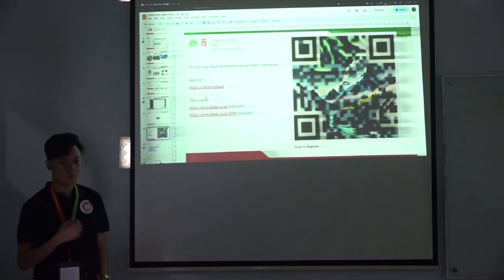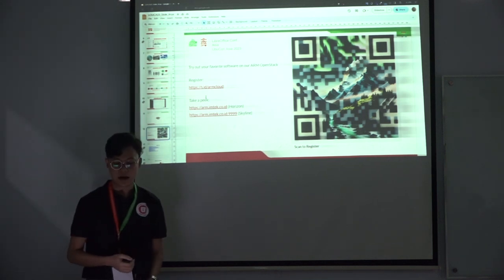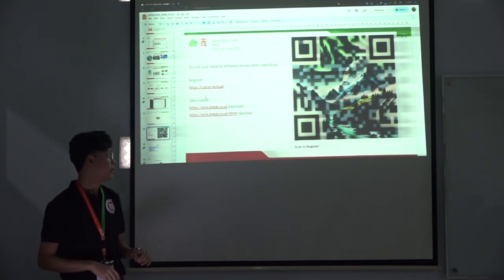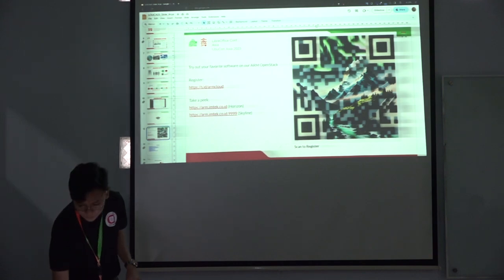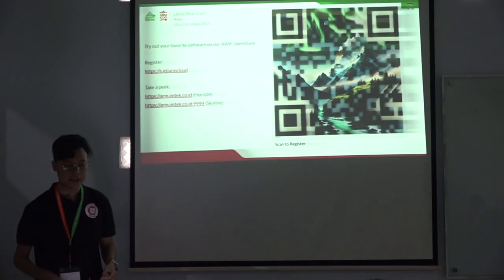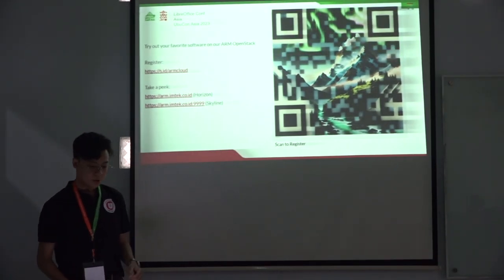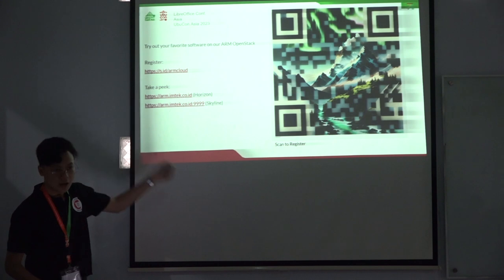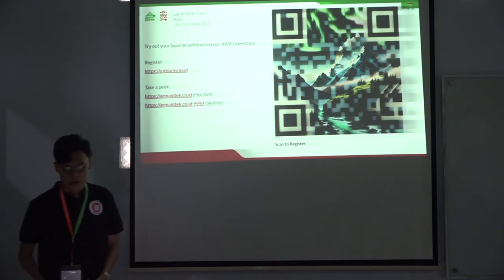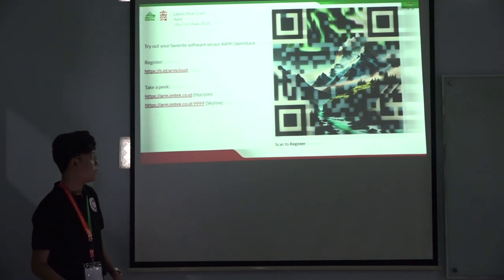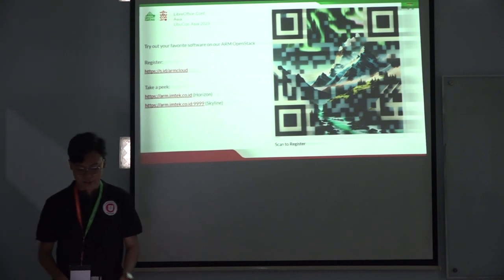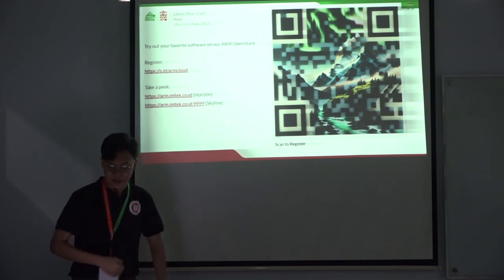If you have applications and want to try them on a different CPU architecture, you can try it on our environment — we've already set it up. We will give you access for free. You can try your software on our ARM OpenStack. Just register and tell us your purpose. We have two dashboards — Horizon and Skyline. To register, please scan the QR code.